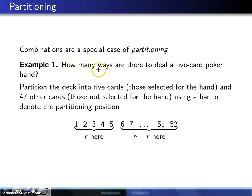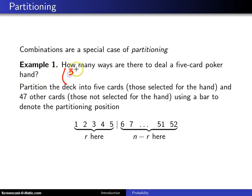So example one here is how many ways are there to deal a five-card poker hand? Now we've seen this problem before. You know that the solution to it is 52 choose 5, and that's about two and a half million.